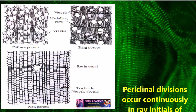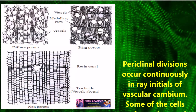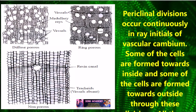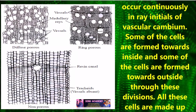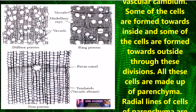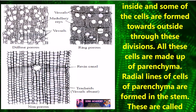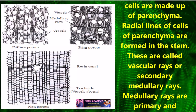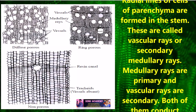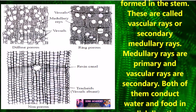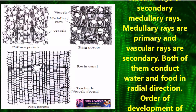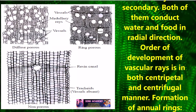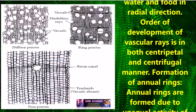Let us discuss the activity of ray initials. Periclinal divisions occur continuously in ray initials of vascular cambium. Some cells are formed towards the inside and some towards the outside through these divisions. All these cells are made up of parenchyma, forming radial lines called vascular rays and secondary medullary rays. The medullary rays are primary and vascular rays are secondary. Both conduct water and food in the radial direction. The order of development of vascular rays is both centripetal and centrifugal.